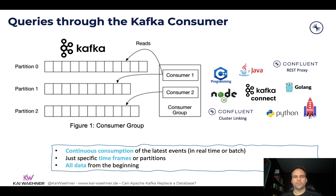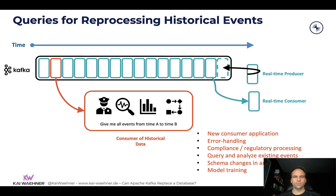Here's a concrete example with ksqlDB. On the left side, you have a payment stream — each new payment is a new event appended to the log. In the application on the right side, there is also business logic where you keep state in the ksqlDB client. For every stateless payment appended to the log, you also update the credit score on the right side — so this is a stateful application where you keep state in the client application, continuously updated in real time as new payments happen. But afterwards, you can still query that data with a pull query. This is how you combine these technologies and concepts.